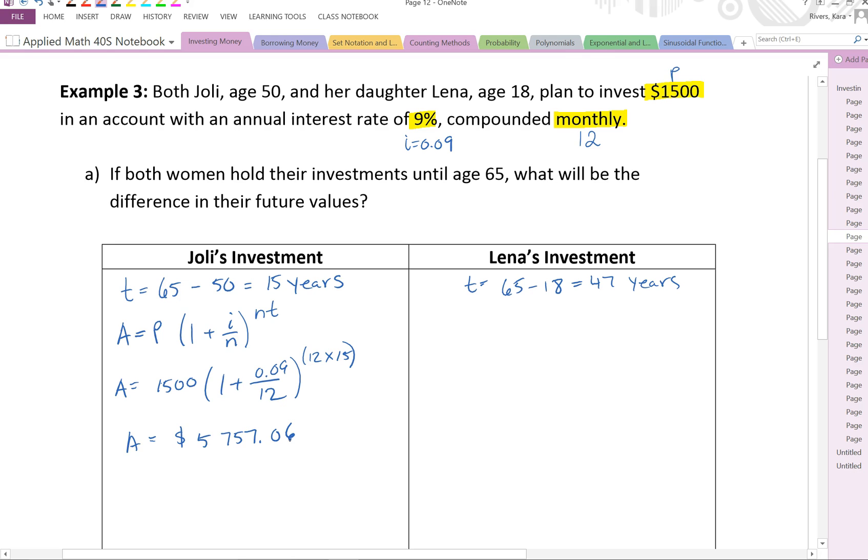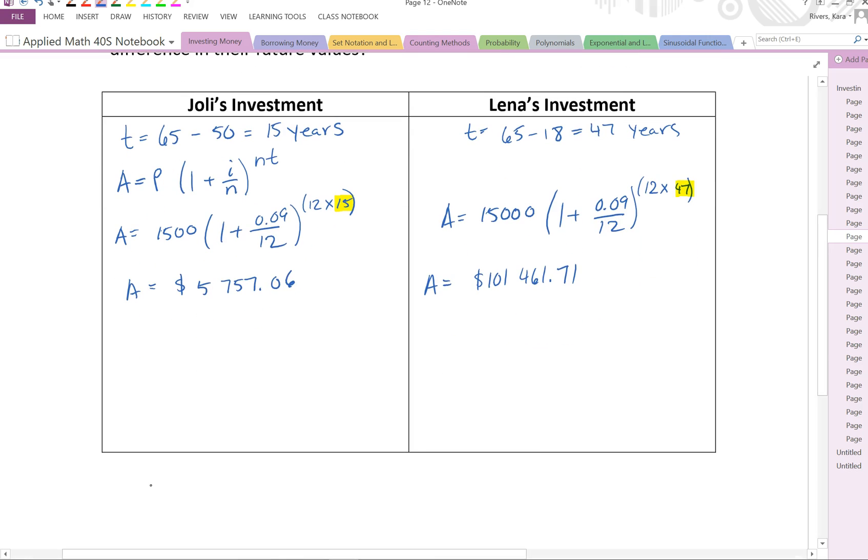Now, I'd like you to go ahead and do Lena's and see what you get for her investment. And you should get an answer of $101,402.71. And the only value we changed in our formula was the 15 to a 47. But because it's in that exponential part, that's really significant for the amount of money you're going to accumulate in that amount of time through interest. So they want us to know what the difference is in their future value. So let's subtract them.